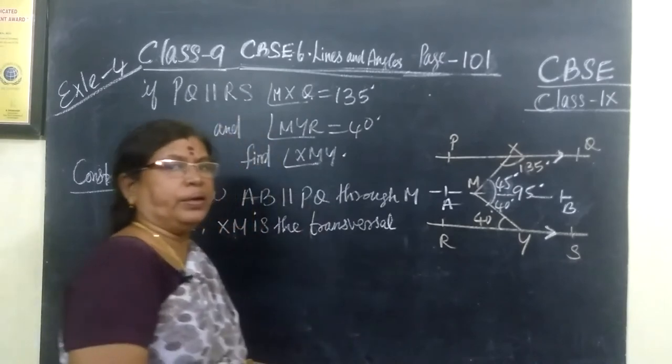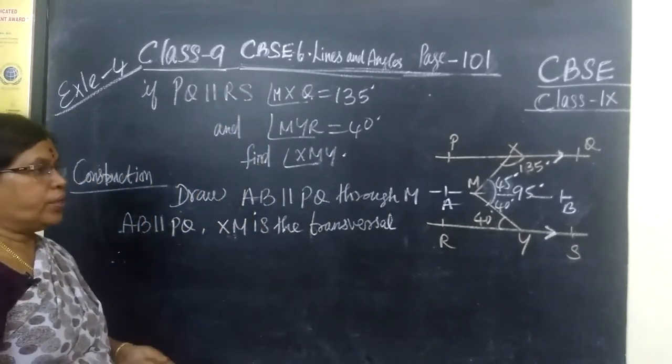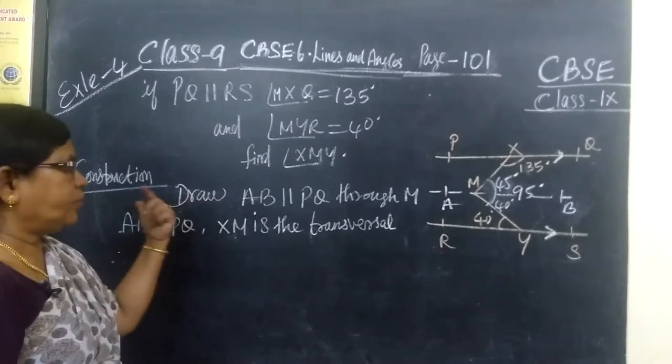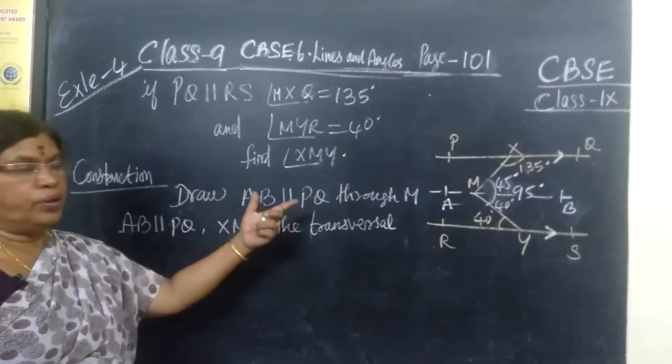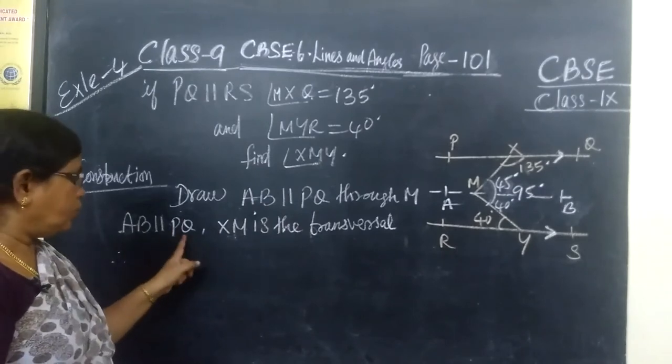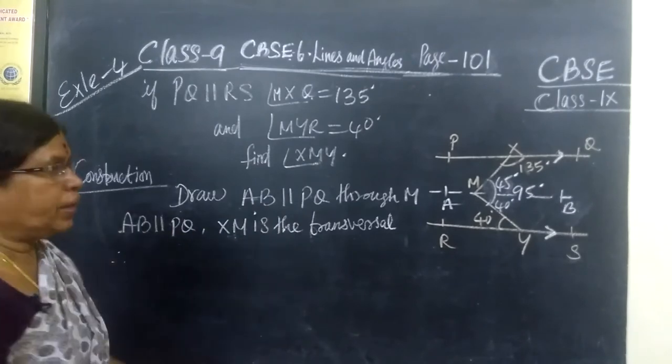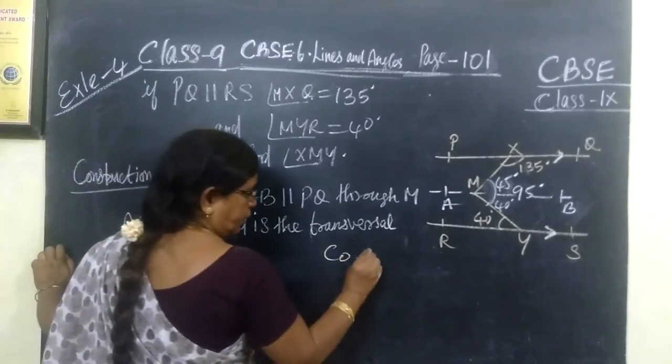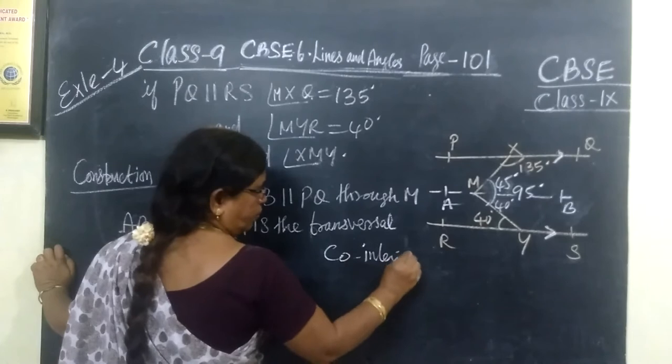So within one second, we can say the answer for this. So you write the step. Draw a construction. Draw AB parallel to PQ through M. Then AB parallel to PQ and XM is the transversal. Therefore, we know co-interior angles are supplementary.